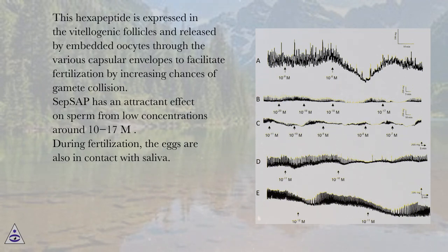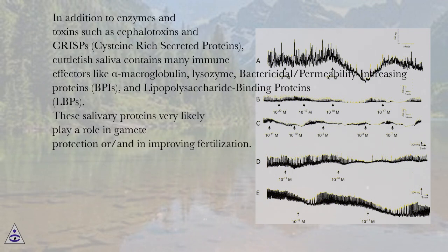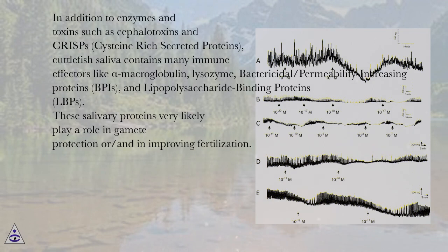During fertilization, the eggs are also in contact with saliva. As early as 1934, Jekyllin suggested that salivary secretions could protect the eggs during spawning. A recent study of the transcriptome and proteome of Sepia officinalis posterior salivary gland seems to confirm this hypothesis. In addition to enzymes and toxins such as cephalotoxins and CRISPs (cysteine-rich secreted proteins), cuttlefish saliva contains many immune effectors like alpha-macroglobulin, lysozyme, bactericidal/permeability-increasing proteins (BPIs), and lipopolysaccharide-binding proteins (LBPs). These salivary proteins very likely play a role in gamete protection and/or in improving fertilization.